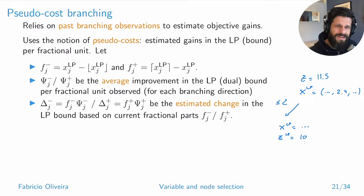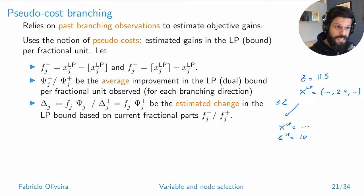You can keep track of the information you're gathering during strong branching. One important piece of information from strong branching is exactly how these variables are affecting the dual bounds per unit of fractional variation, and that feeds directly into building pseudo cost estimates.